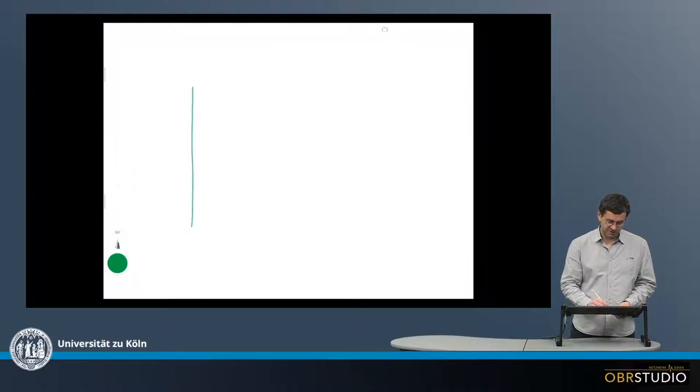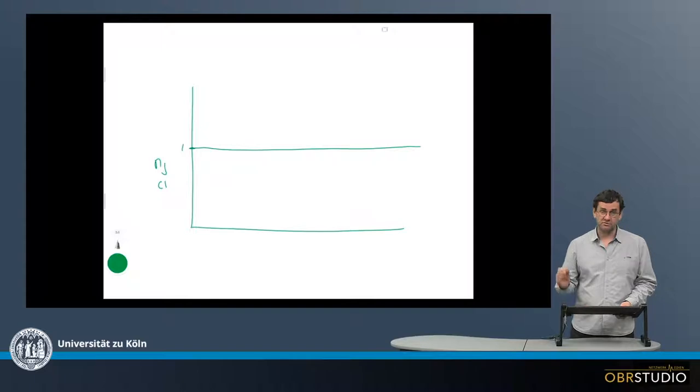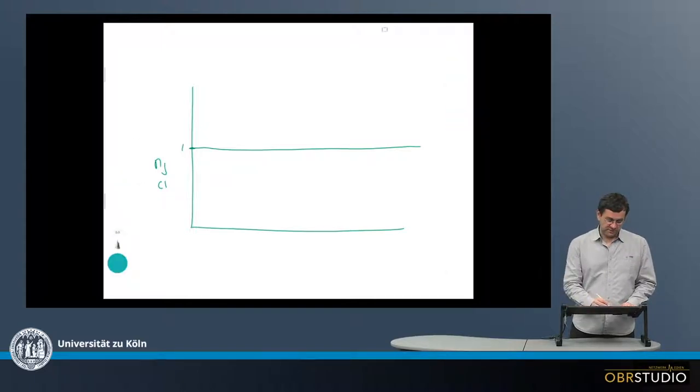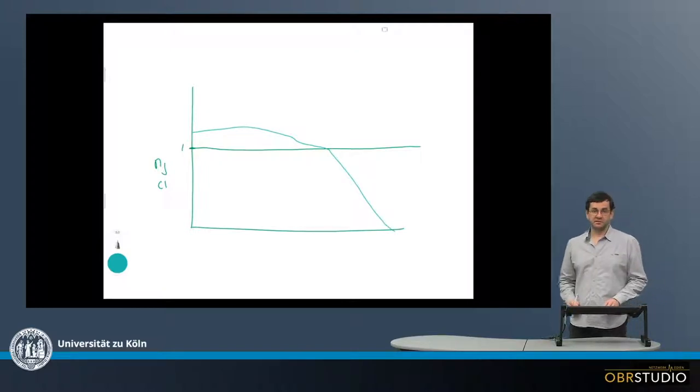So if this is the plot here, the normalization to magnesium and CI, and then CI would be, of course, at 1, because if this concentration is normalized to itself, it is always 1. And then there might be one pattern of CM chondrites, for example, that looks something like this. And then here's the volatile element depletion.